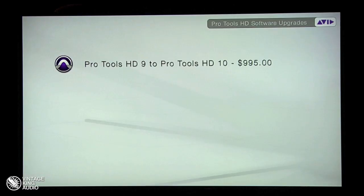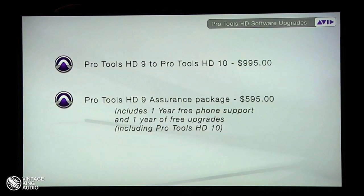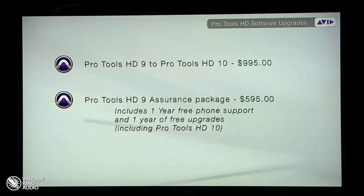Software upgrades: HD9 to HD10 — when we announced it, a lot of people were shocked. It's $9.95 to upgrade from HD9 to HD10. It's a lot of money, yes. But look at the features you're getting and how much faster and better you're going to work. To sweeten the pie, if you're on Pro Tools HD9 you can buy the Assurance Package, which includes a year of free phone support and a year of free upgrades. If there's a paid upgrade to Pro Tools 10, 11, or 12, you get it for free for 12 months. Kind of a no-brainer.